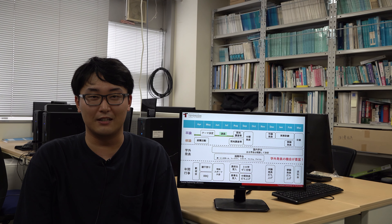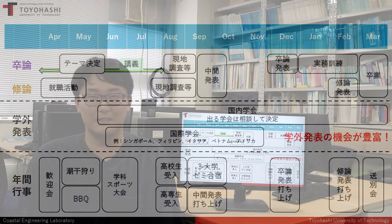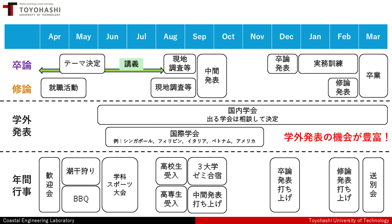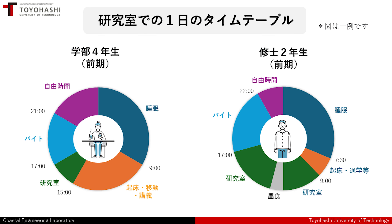研究室の年間行事予定はこのような感じとなっております。1年間を通して行事が豊富にある研究室です。学会の発表の機会も豊富で、成果をあげれば国際学会にも参加することができます。アジア以外にも欧米諸国に行けるチャンスもあるかもしれません。研究室にはコアタイムがないので、主体性や計画性を持って空いている時間に研究を進めています。